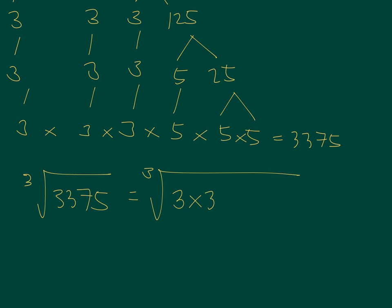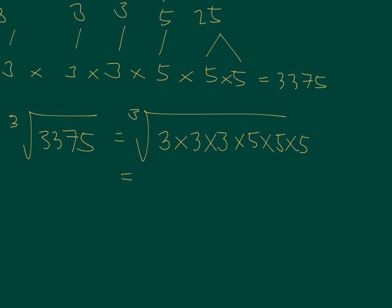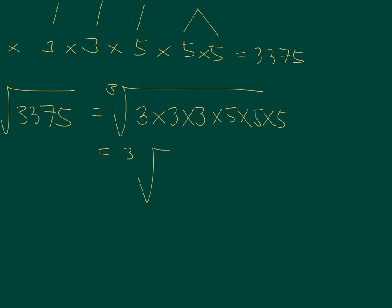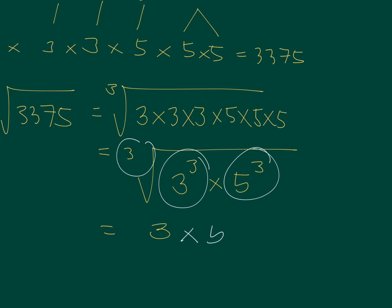So we get 3, 3, 3, 5, 5, 5. Let's apply the idea of the square root. This time we are taking the cube root of a cube. So it's basically the same. So cube root of 3 cubed is 3, and then cube root of 5 cubed is 5. That is why we have 15.